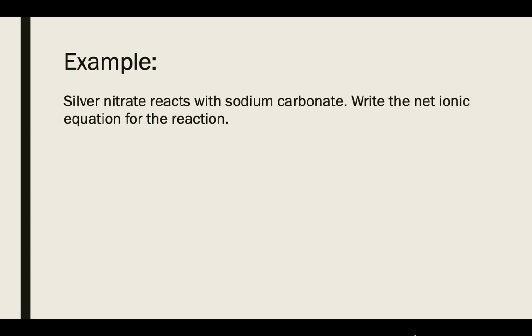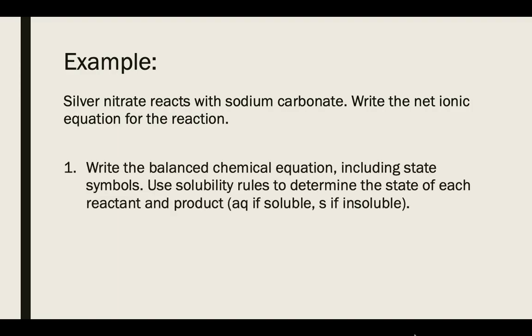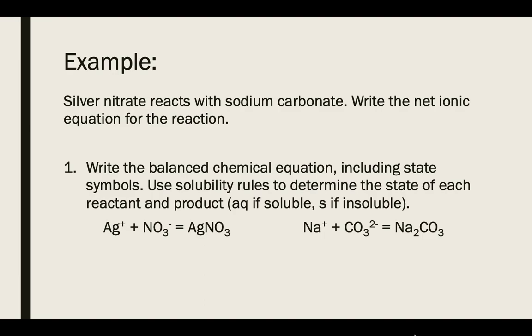We're going to go through an example. If silver nitrate reacts with sodium carbonate, we'll write a net ionic equation for that reaction. This starts with writing the balanced chemical equation, and we need to classify each reactant and product as aqueous or solid using solubility rules. Silver has a charge of positive 1 and nitrate has a charge of negative 1. Those charges cancel each other out, so no additional subscripts are necessary. The formula for silver nitrate is AgNO₃.